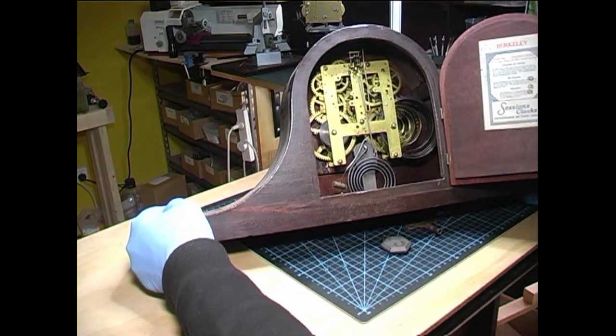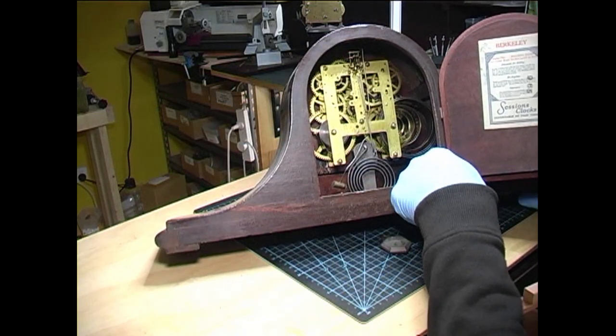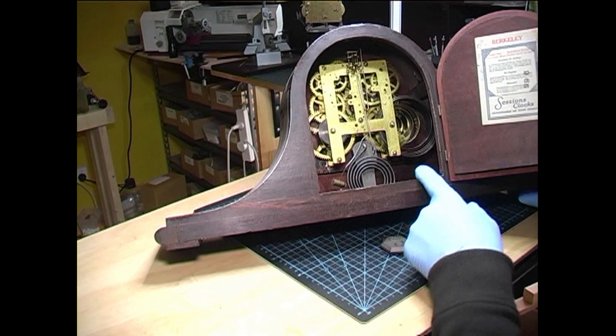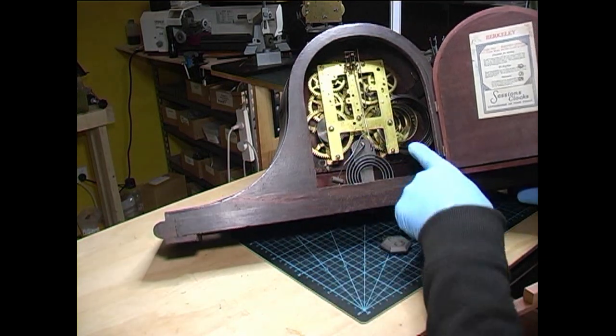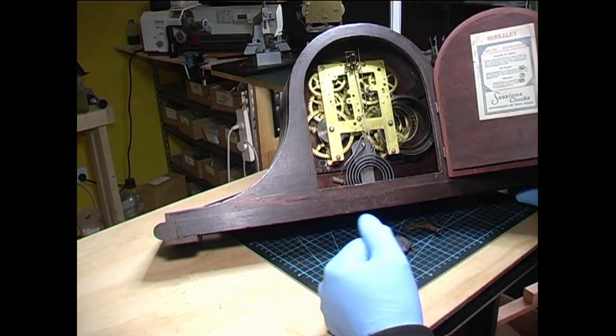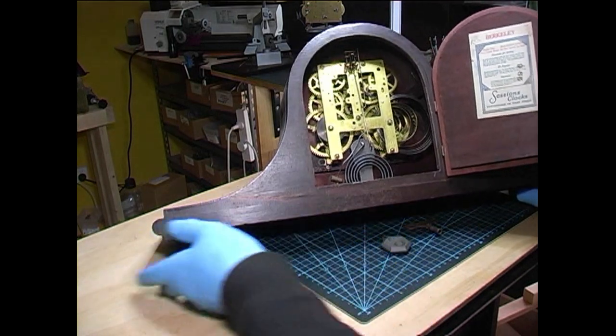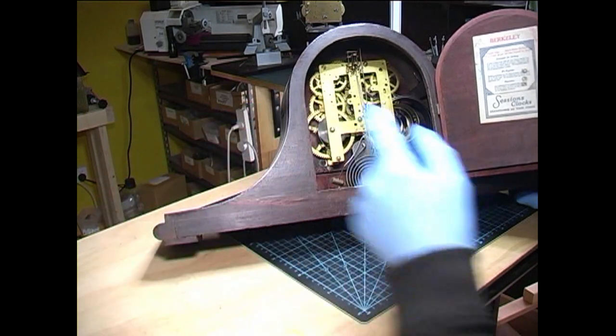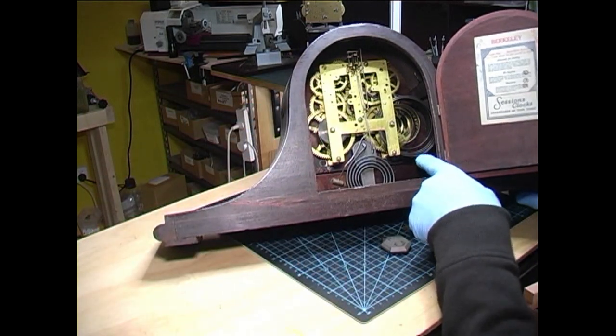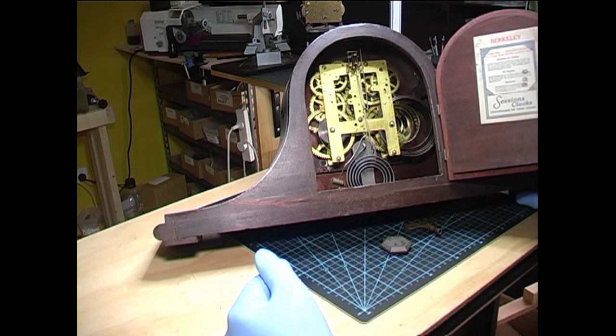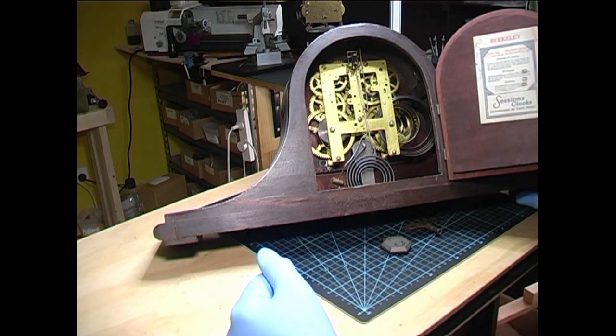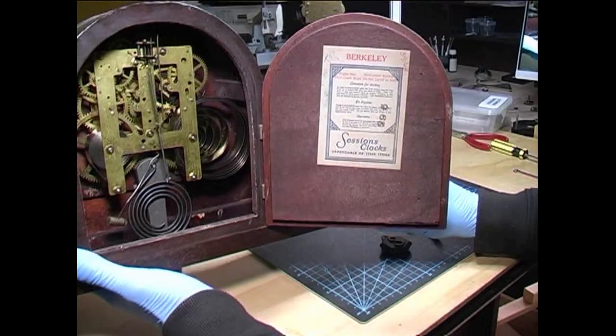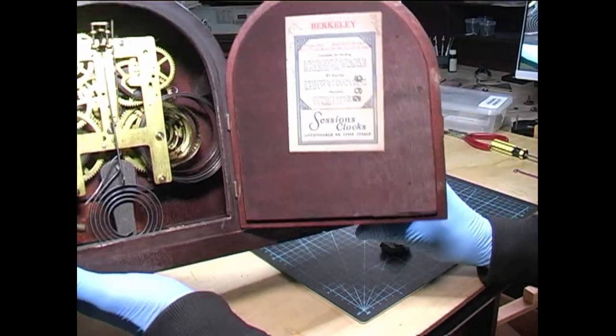That's the movement. You'll notice one of the springs is unwound. I tried to wind it before, but it wouldn't wind up. The going side is, but the strike side isn't wound. So either we've got a problem with the click or the click spring or the spring is broken. We won't find that out until we remove the movement, which we're going to do now. That's the paper label on the clock.